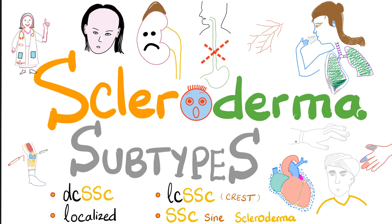We have five main subtypes: diffuse cutaneous systemic sclerosis, limited cutaneous systemic sclerosis — formerly known as CREST syndrome — localized scleroderma, systemic sclerosis sine scleroderma, and the last one is scleroderma that overlaps with something else, such as systemic sclerosis plus lupus, systemic sclerosis plus Sjögren's, or systemic sclerosis plus dermatomyositis.